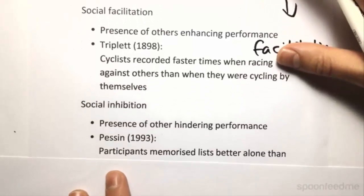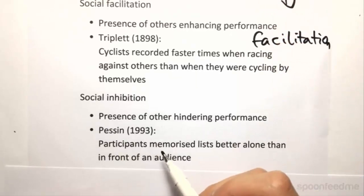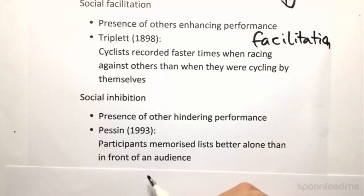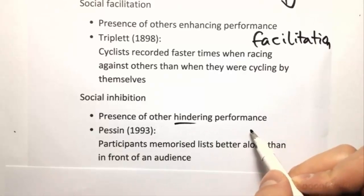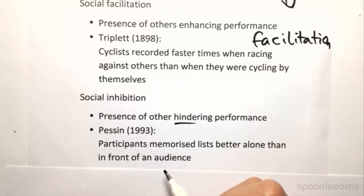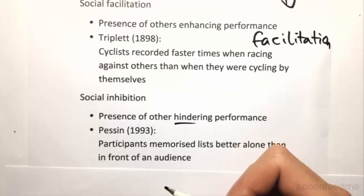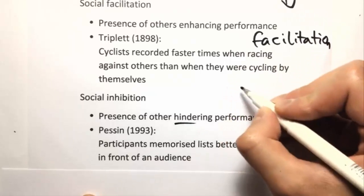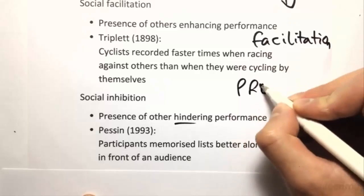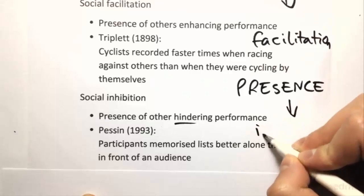However, then we have Pessin showing that participants memorized lists better alone than in front of an audience, showing that the presence of others actually hinders performance. What he did was give people nonsense syllables like XYL or YLP, and got them to memorize them by themselves versus in front of others — finding that they did worse in front of others. So here, presence leads to inhibition.